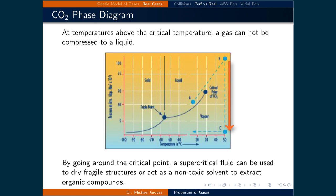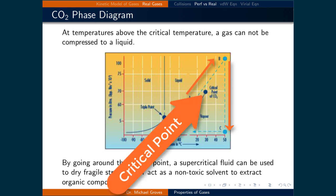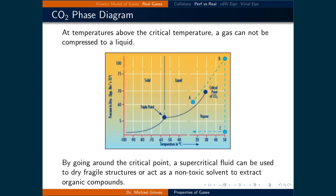We could then lower the pressure so that the CO2 would become a gas. By going around the critical point, a supercritical fluid can be used to dry fragile structures since no hard phase change occurs. It can also act as a non-toxic high-pressure solvent which can permeate every pore to extract organic compounds. CO2 is the most common supercritical liquid since the critical point occurs at 31.1 degrees Celsius.